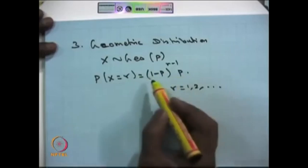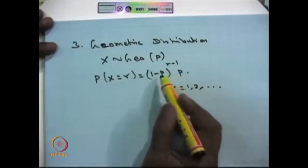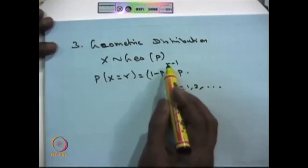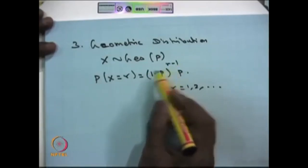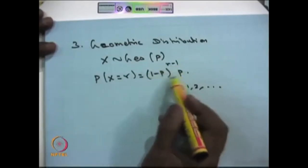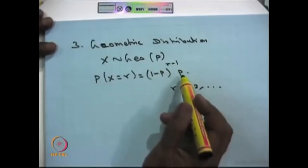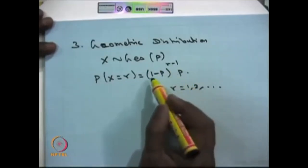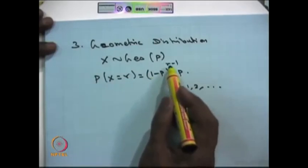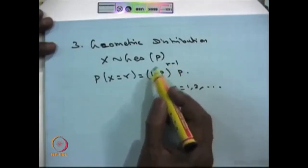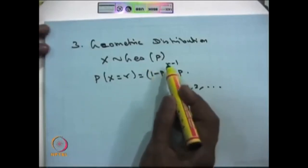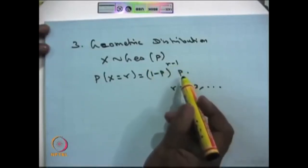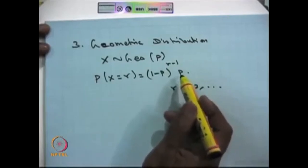This represents the probability that the r-th trial gives the first success. Since all trials are independent, you have r-1 failures followed by the first success in the r-th trial — giving (1-p)^(r-1) for the r-1 non-success trials and p for the first success in the r-th trial.